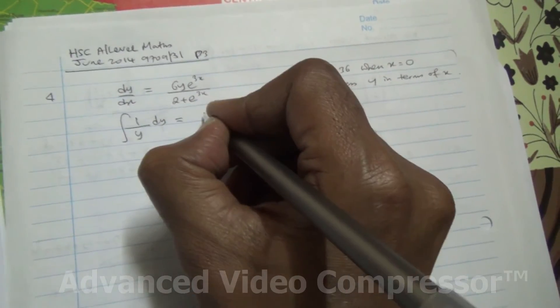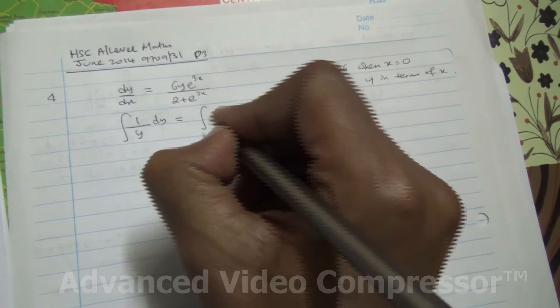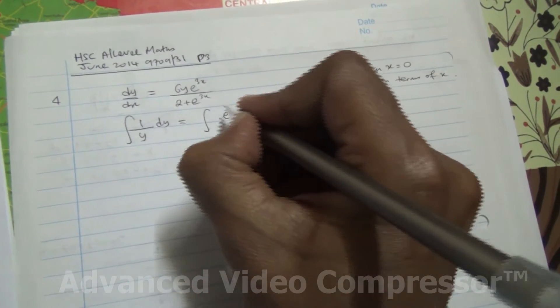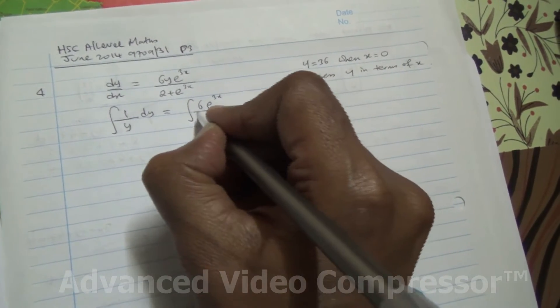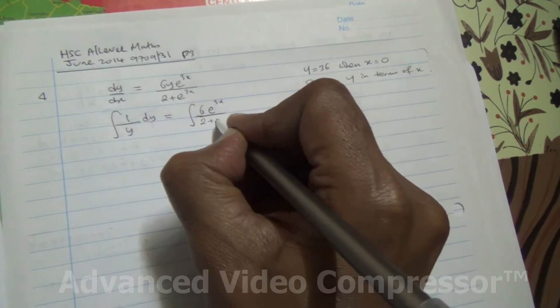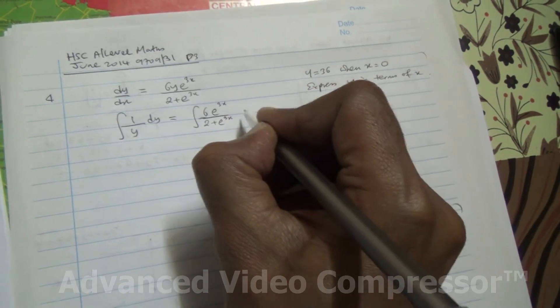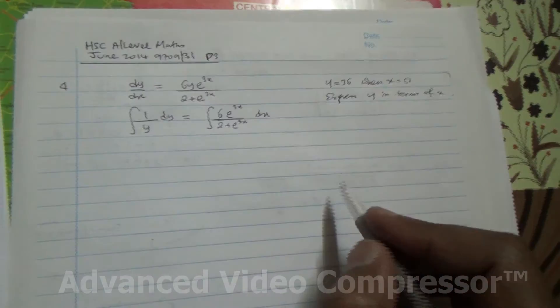we're going to integrate this is equal to the integral of 6e to the 3x divided by 2 plus e to the 3x dx. Alright, so now, how are we going to do this?